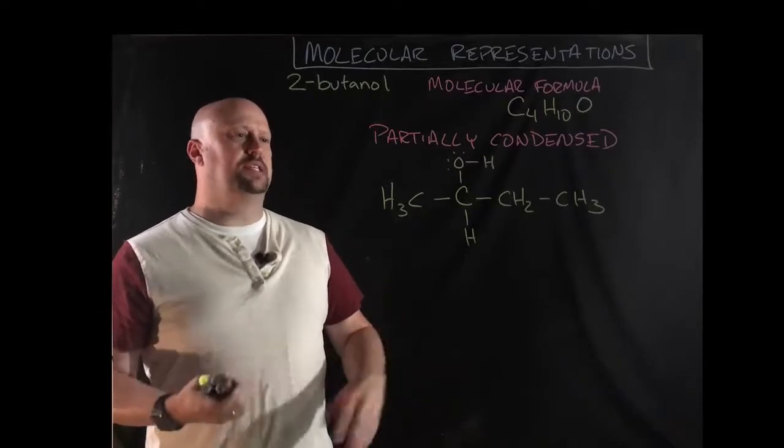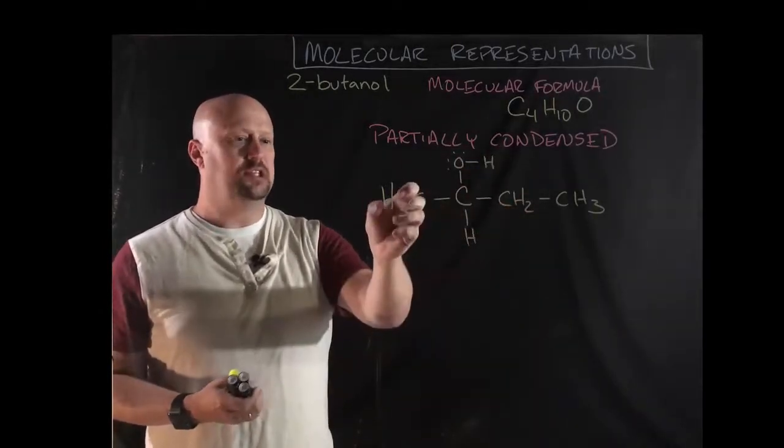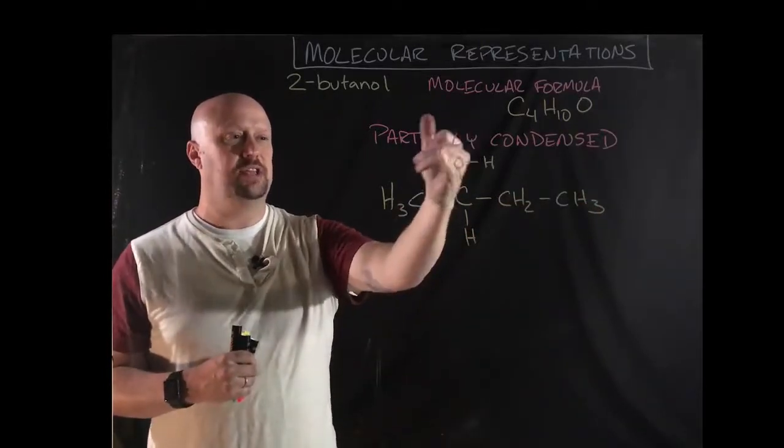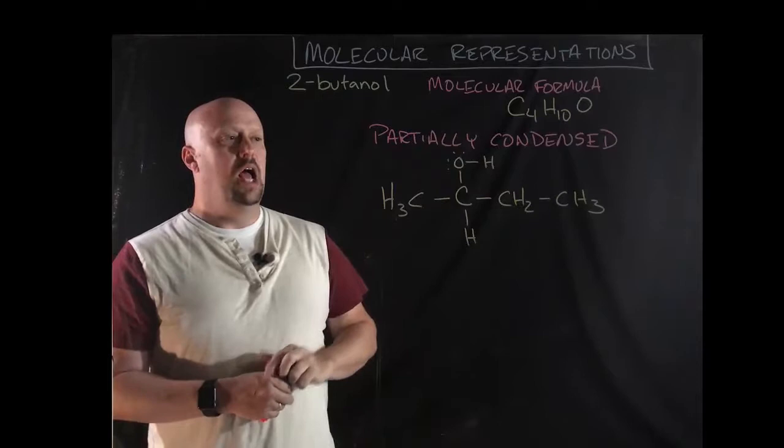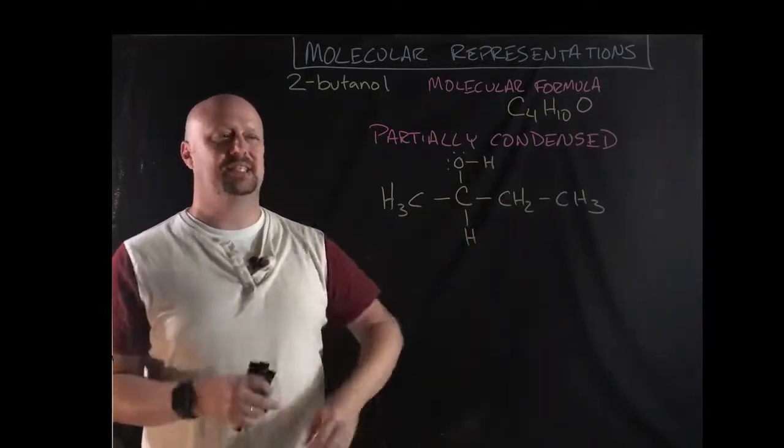You'll note that what is similar to the Lewis diagram, the structure obviously is the same. It's just that we've sort of shrunk things down a little bit. We've made it a little bit more condensed. You'll see that there are still lone pairs there. In our next version, you're not going to see the lone pairs. We're going to condense this down even further.